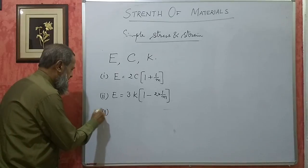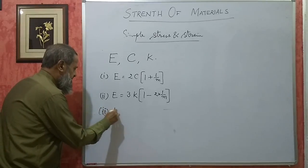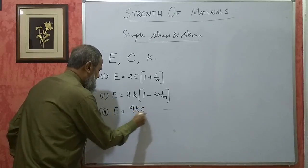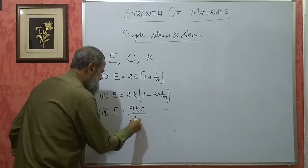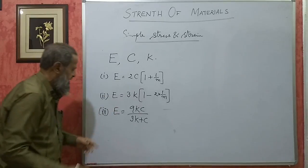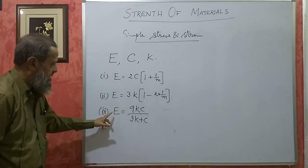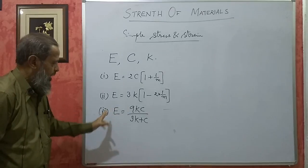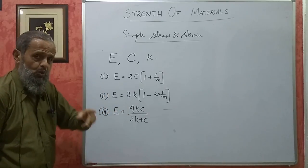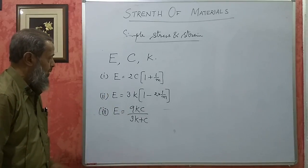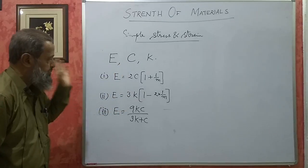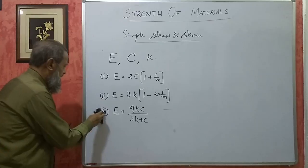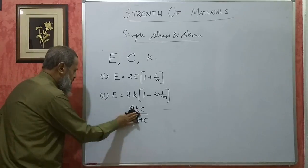The third relationship is E = 9KC / (3K + C). This relationship connects Young's modulus, bulk modulus, and modulus of rigidity. Out of these three, if we know any two, the third one can be found out. These relationships we must remember — they can ask a problem on this also.